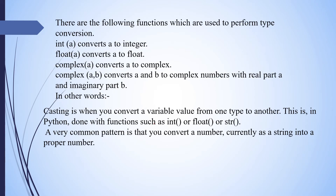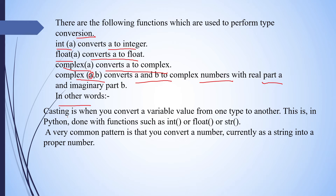There are the following functions used to perform type conversion. int(a) converts a to integer. float(a) converts a to float. complex(a) converts a to a complex number. Casting is when you convert a variable value from one type to another. This is done with the help of functions such as int, float, or string.